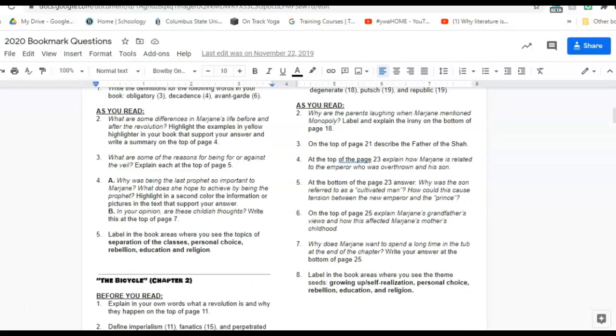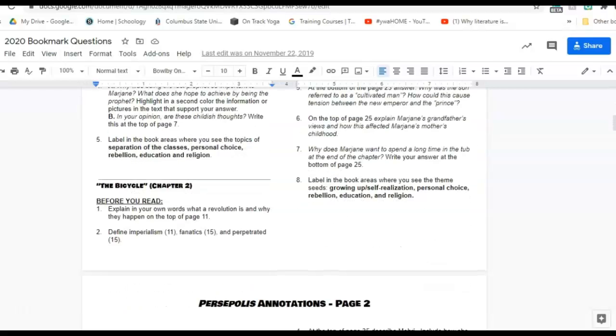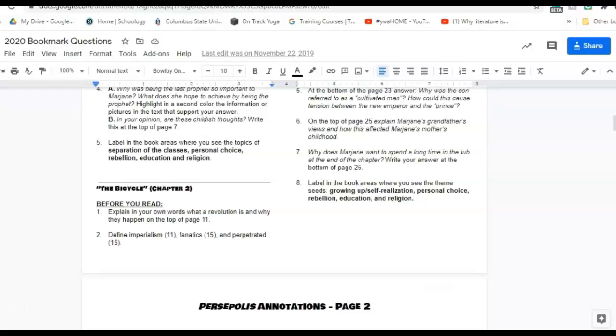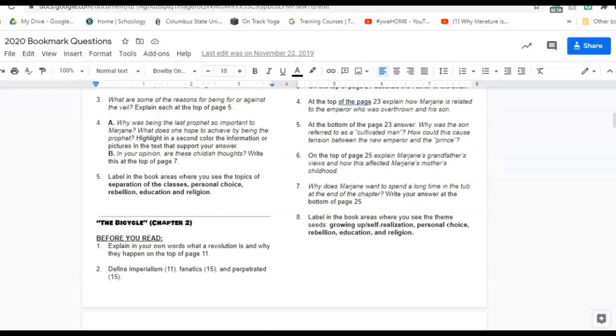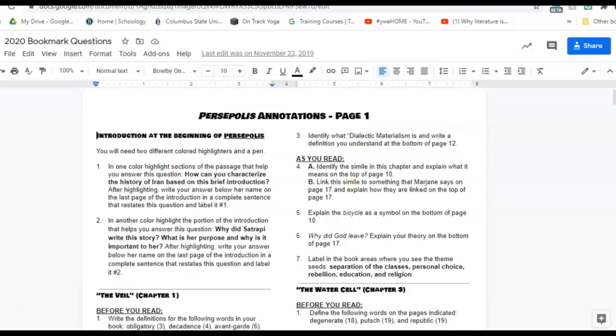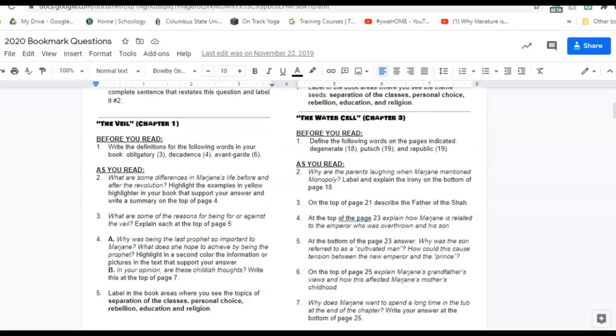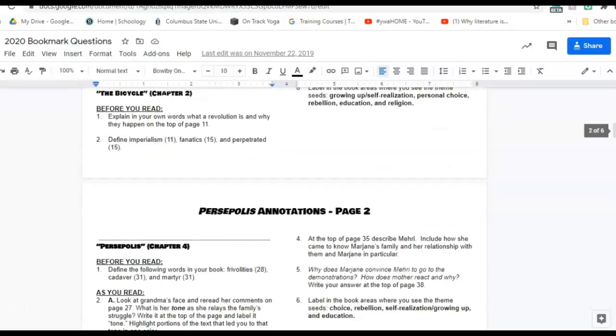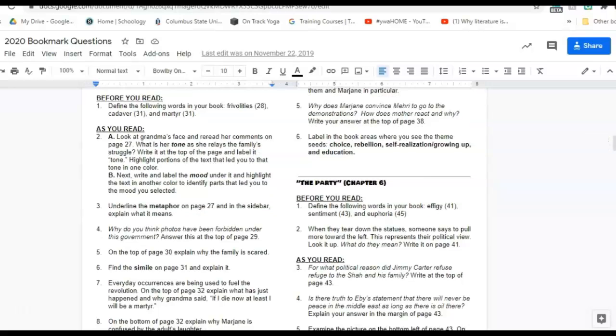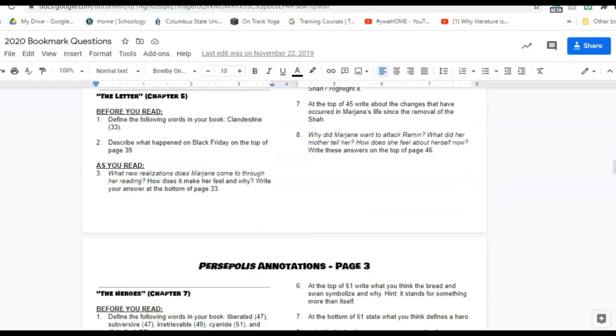So your annotation and reading checks are going to vary quite a bit. As you look through, you'll notice that chapter two, before you read, explain in your own words and define. And then as you read, it gives you specific page numbers where to write your responses. This is the way it is set up throughout the entirety of the annotations for every single chapter.